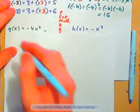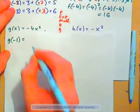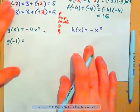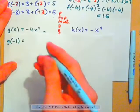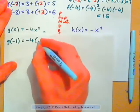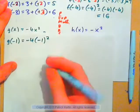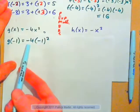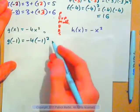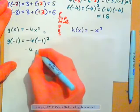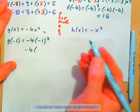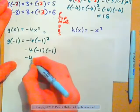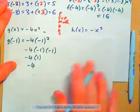If g of x is negative 4x squared, calculate g of negative 1. That would be negative 4 times, in parentheses, negative 1 squared. Remember your order of operations — we apply the squared first, then multiply. So, that's negative 4 times negative 1 times negative 1, which gives negative 4 times 1, which is negative 4.